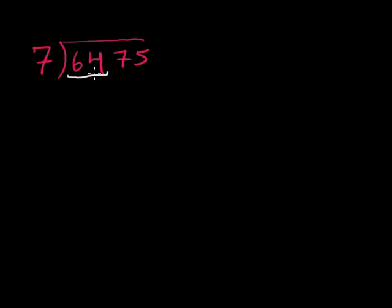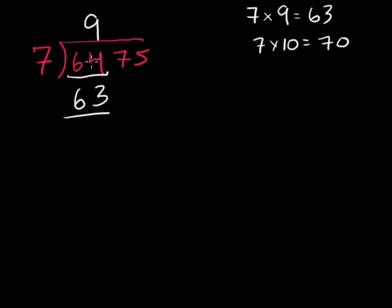7 goes into 64 how many times? Let's see, 7 times 7 is, well that's way too small. Let me think about it a little bit. Well 7 times 9 is 63. That's pretty close. And then 7 times 10 is going to be too big. 7 times 10 is 70. So that's too big. So 7 goes into 64 9 times. 9 times 7 is 63. 64 minus 63 to get our remainder at this stage is 1.